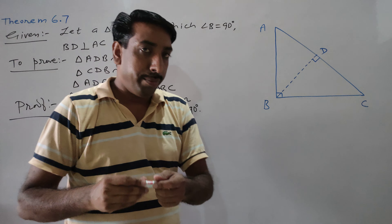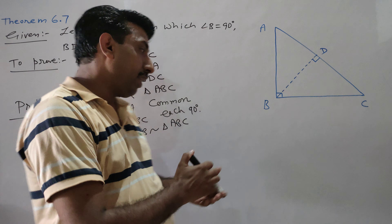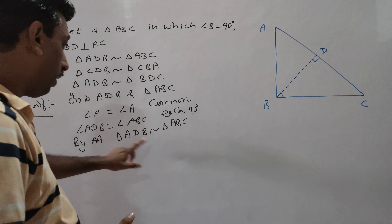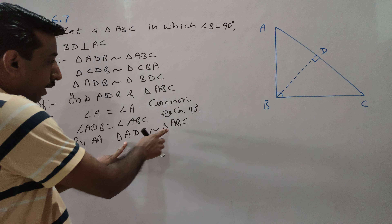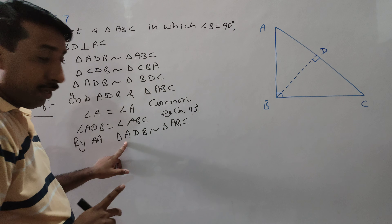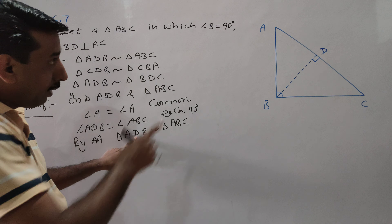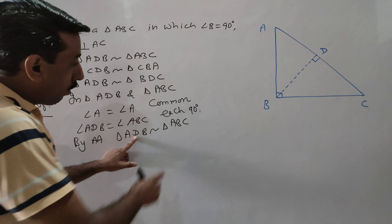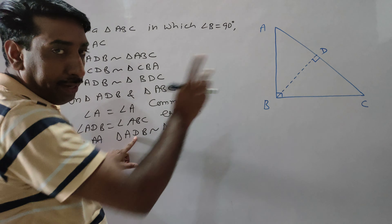Now let's talk about the naming of the second pair. The name is ADP. Angle A equals angle A, angle D is 90 degrees, and angle B is 90 degrees.